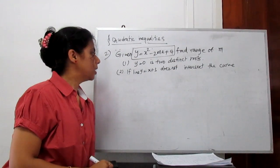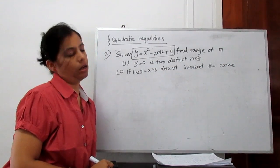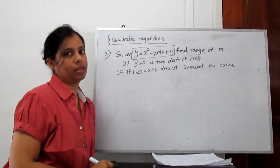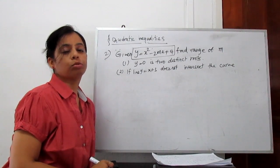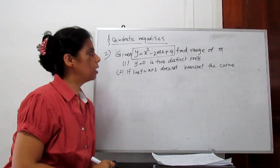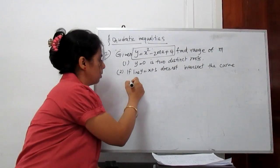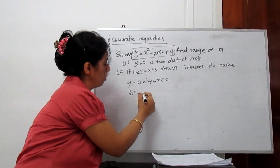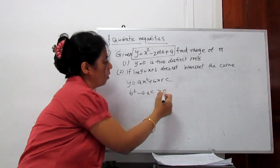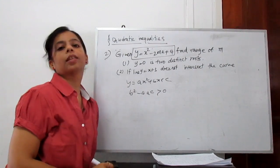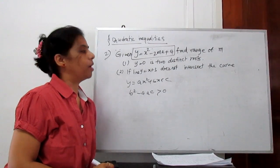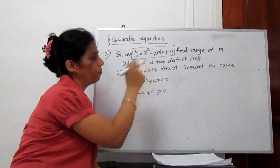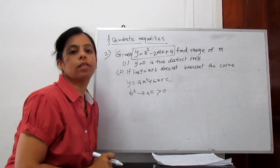Two distinct means two different roots. If you saw my previous video, we learned about the discriminant. If our equation is y equals ax squared plus bx plus c, then the discriminant b squared minus 4ac should always be positive — greater than 0 — to give two real different roots. So we need to prove this condition and find the range: for what range of m should this always be greater than 0?